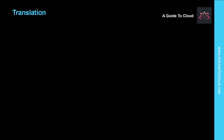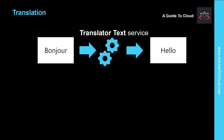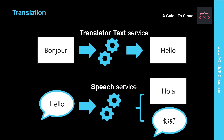In this example, we're going to look at translation. The translation text service enables you to translate text between more than 60 languages. As you notice, the text 'Bonjour' is translated to 'Hello.' You can also translate audible speech by using the Speech Service, which has the ability to produce translated output in text or audio format. When 'Hello' is submitted to the speech service, it returns the value as 'Hola' and something in Chinese — I'm sure it is 'Hello' in Chinese.